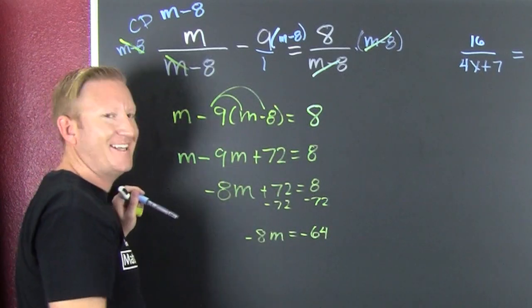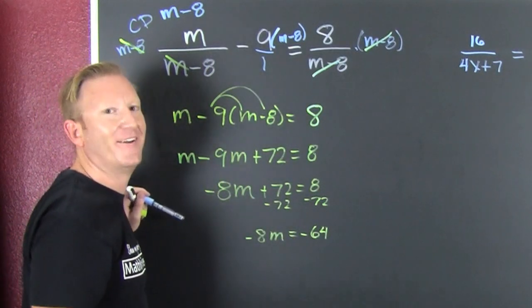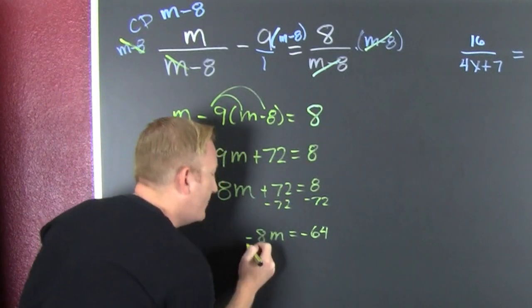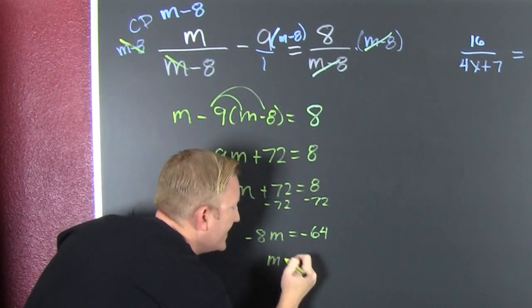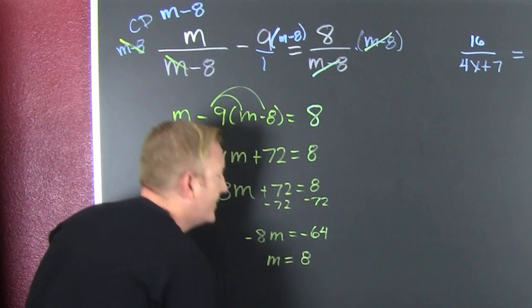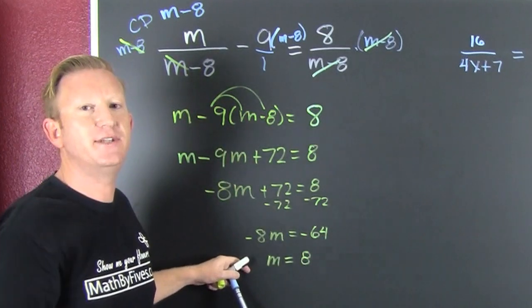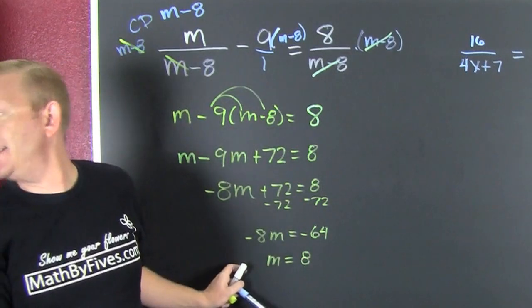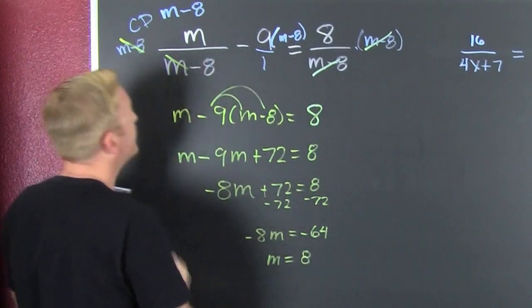That's nice. Our next example is 64 all over it. Divided by minus 8 and m is 8. Just when you thought you were done, you have to check it. So then we go and we check. We check m equal 8.